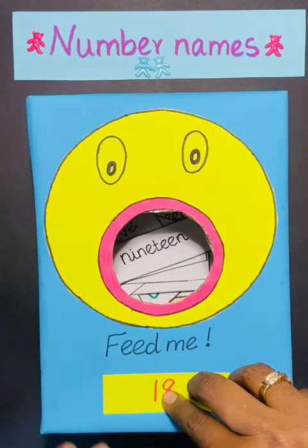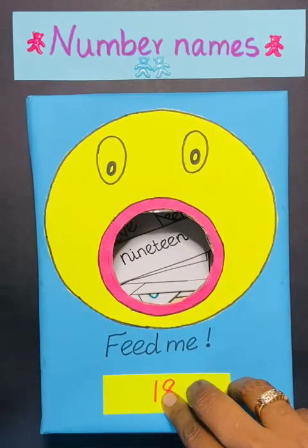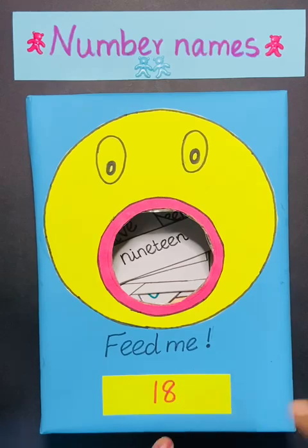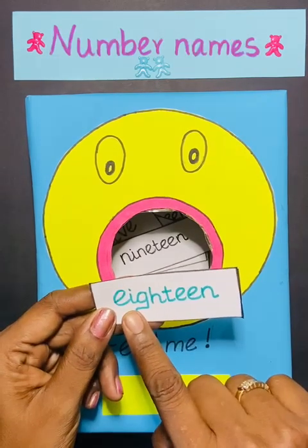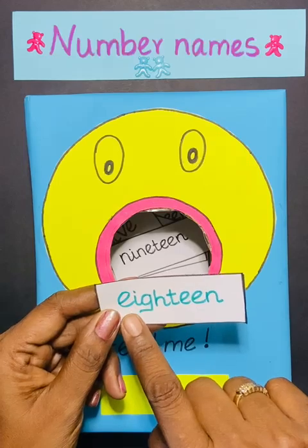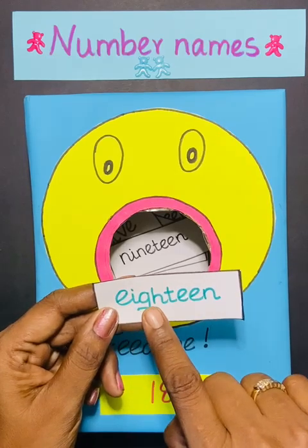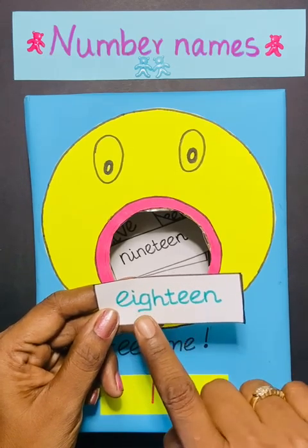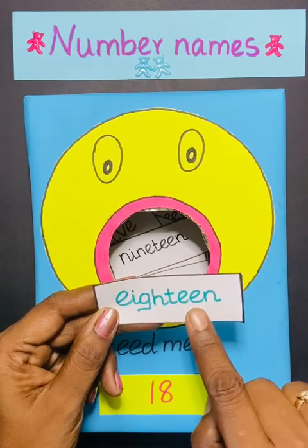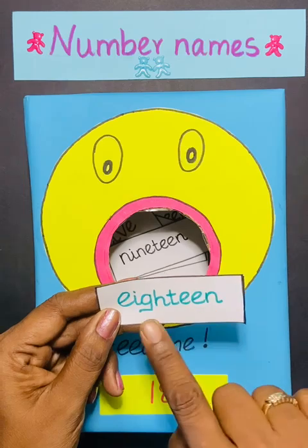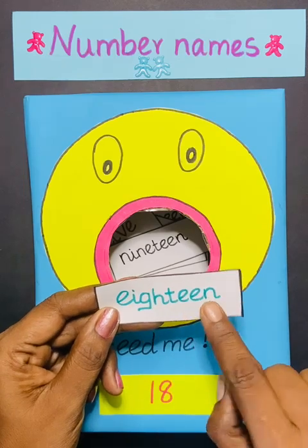The next number is 18. Same — 18 means first you have to write the spelling of 8. E-I-G-H-T. 8. Then E-E-N. Teen. 18.